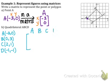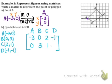Since I have more than one point, the points are listed across the top: A, B, C, D. Then we write the x's on top of each point and the y's on the bottom. So point A: negative three, zero; point B: zero, three; point C: two, one; and point D: negative one, negative one. All the x's are on the top and the y's are on the bottom. We have now written this quadrilateral in matrix form.